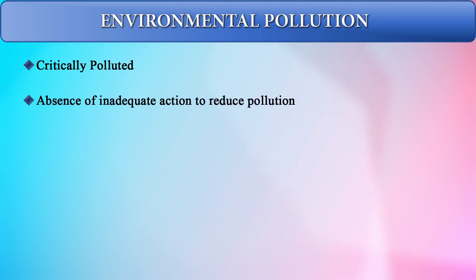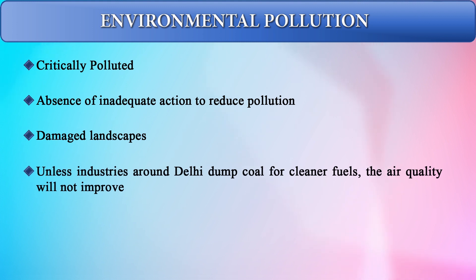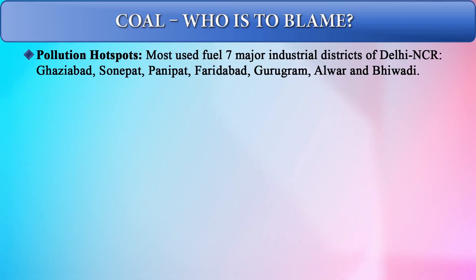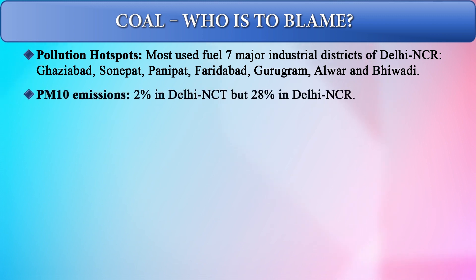The absence of adequate action to reduce pollution results in damaged landscapes. Industries around Delhi continue to dump coal instead of switching to cleaner fuels, so air quality has not improved. In 1990 the Supreme Court gave a directive to switch to compressed natural gas by April 2001, yet coal is still being used with many thermal power plants operating. The seven major industrial districts of Delhi and the NCR — Ghaziabad, Sonipat, Panipat, Faridabad, Gurugram, Alwar, and Bhiwadi — are the primary pollution hotspots.